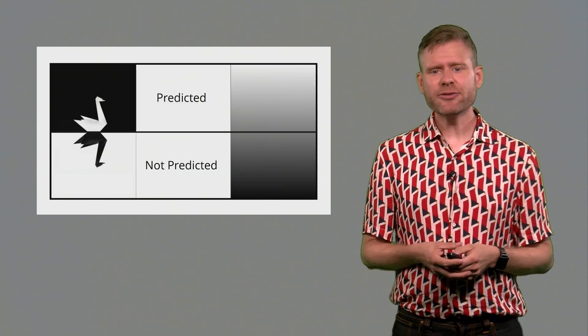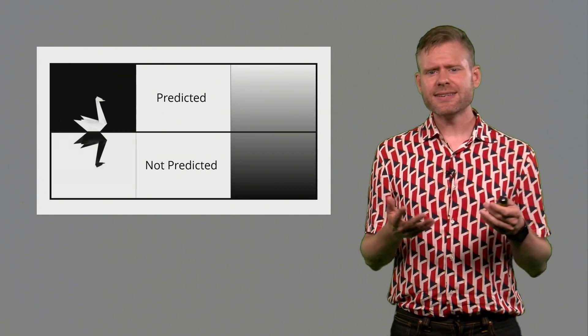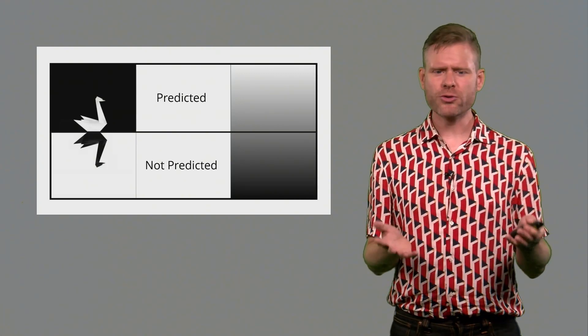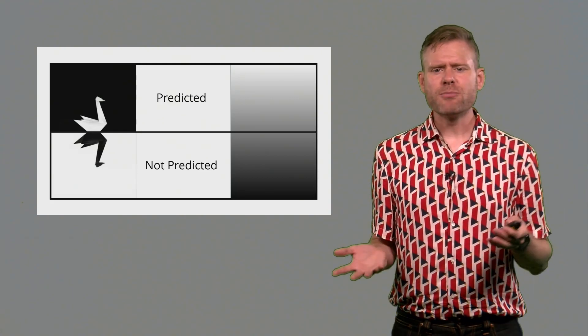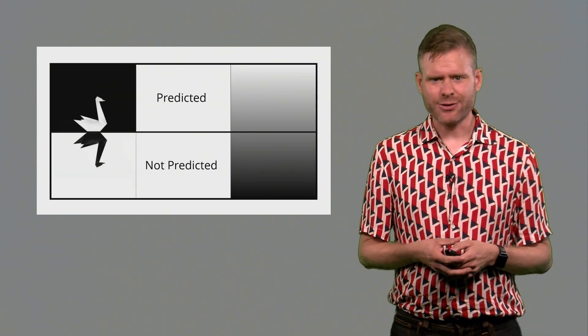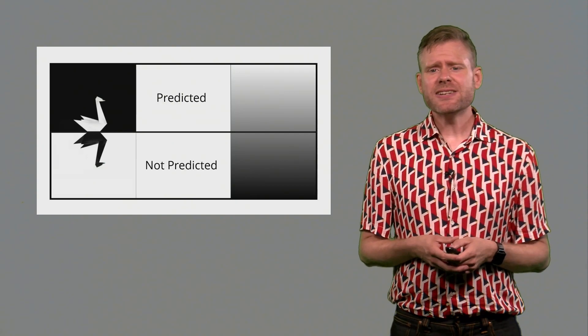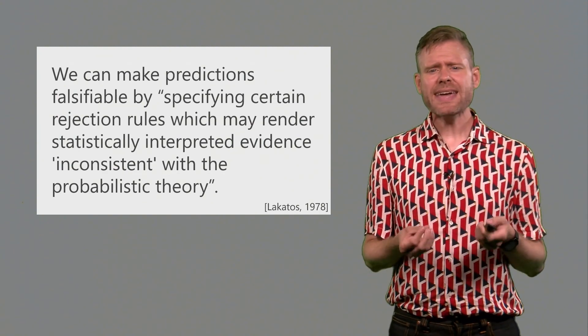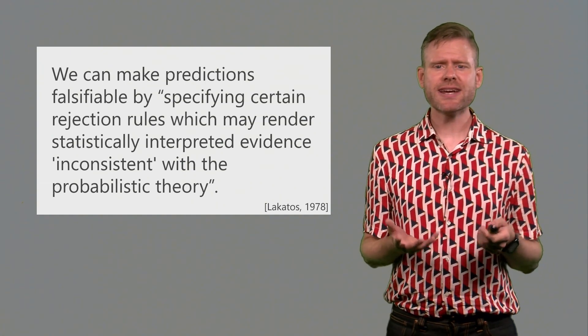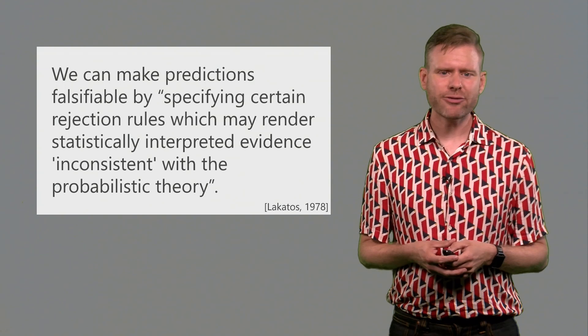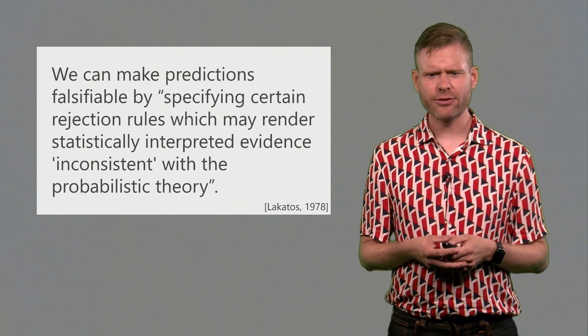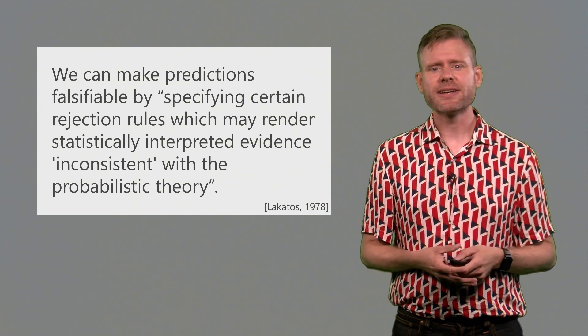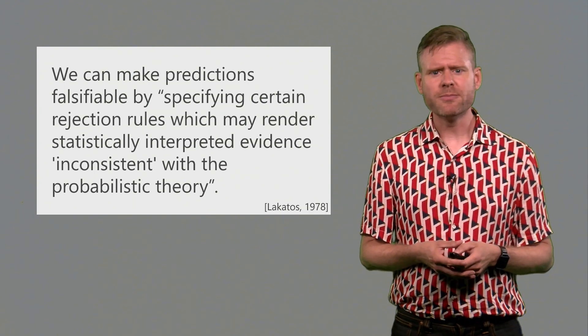Now these kinds of tests are more difficult if we have a probabilistic environment. Many situations where we rely on statistical inferences are situations where we can't divide the world into concrete different states. The world is probabilistic. Things are more or less likely to happen. So sort of more like the grayscale that you can see on the right of this slide. In these situations we can still divide the world into an area that we predicted and that we didn't predict. We can make our predictions falsifiable by specifying certain rejection rules which may render statistically interpreted evidence inconsistent with probabilistic theory. So this is a statement by Lakatos, philosopher on science, who says this is one way in which we can actually make theoretical predictions falsifiable even when these are statements about probabilistic events.